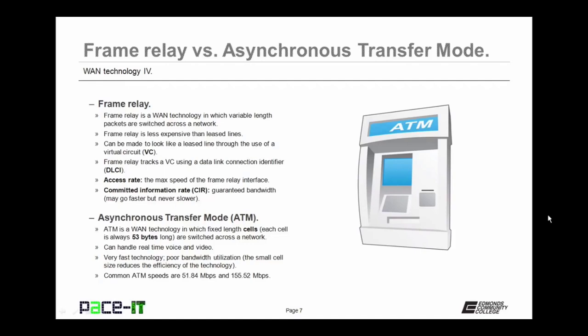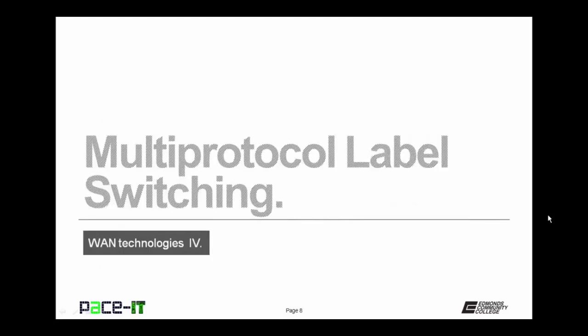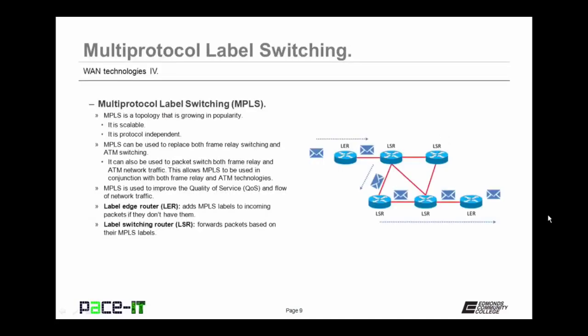Let's conclude with multi-protocol label switching — MPLS. MPLS is a topology that's growing in popularity because it's scalable and protocol independent. MPLS can be used to replace both frame relay switching and ATM switching, and can packet switch both frame relay and ATM network traffic. MPLS is often used to improve quality of service and flow of network traffic. It uses a label edge router to add MPLS labels to incoming packets, then passes those packets onto a label switching router — LSR — which forwards those packets based on their MPLS labels to their final destination.